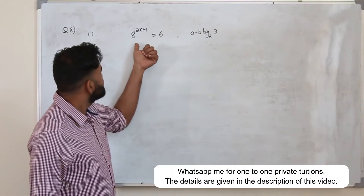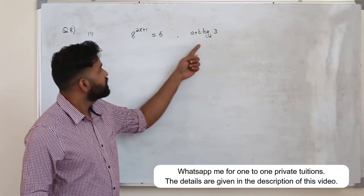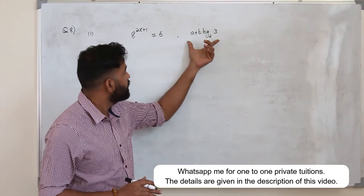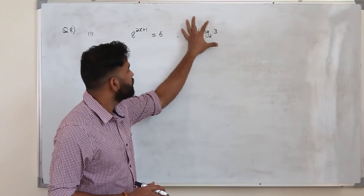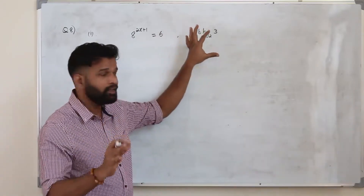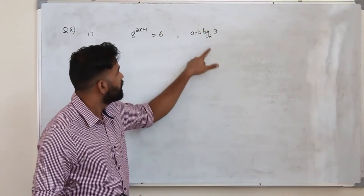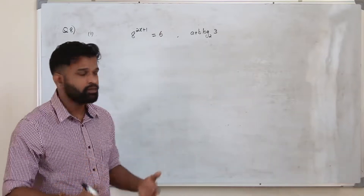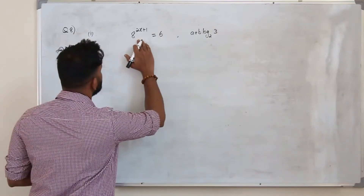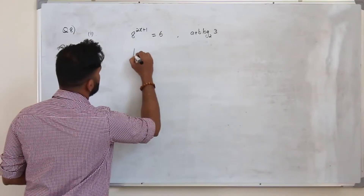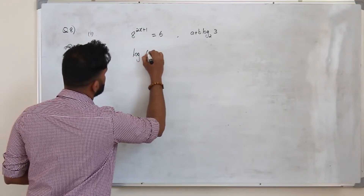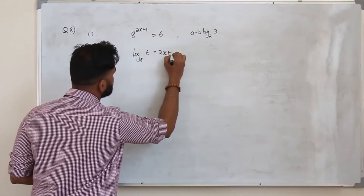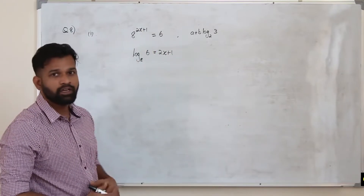They want you to find the exact solution of this equation in this form. You need to find the solution and write it in this form. So rewrite this using logarithms — you can write it as log 6 to the base 8 equals 2x plus 1. This is how we rewrite this using logarithms.